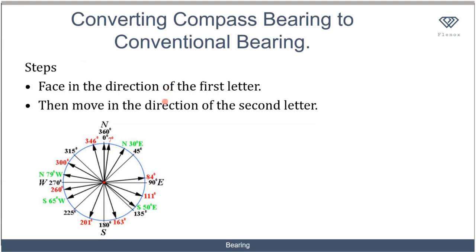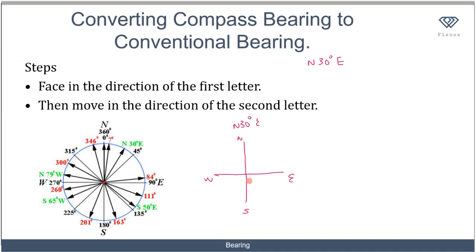Now how do you convert compass bearing to conventional bearing? What I've talked about so far is the conventional bearing, but sometimes we read bearing in compass mode. The first thing to do is face in the direction of the first letter, then move in the direction of the second letter. For example, a compass reading like North 30 degrees East — you face toward the northern direction, then move toward the east. The angle of 30 degrees is North 30 degrees East.